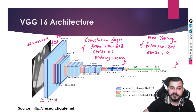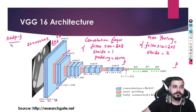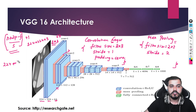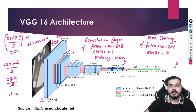Every time we pass through a max pooling layer, the image size gets reduced by half. To calculate this, use the formula: (n + 2p − f) / stride + 1. In this case, n=224, padding=0, f=2, stride=2, so we get (224 − 2) / 2 + 1 = 112. That is why we get 112 after the first max pooling layer. I've already explained this formula in the AlexNet architecture video.